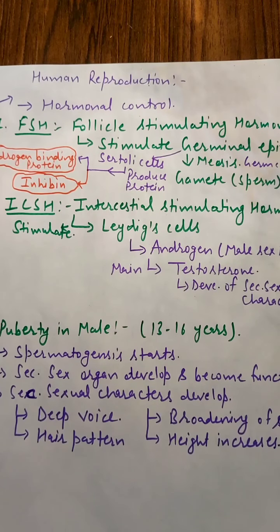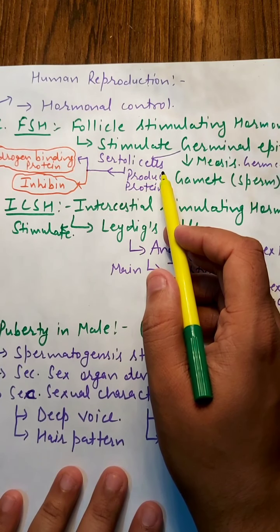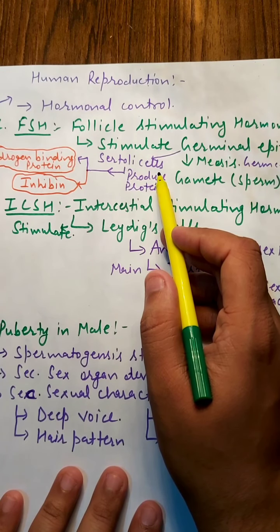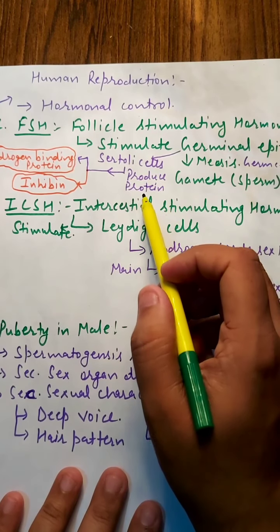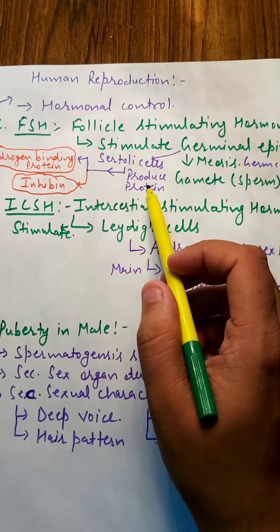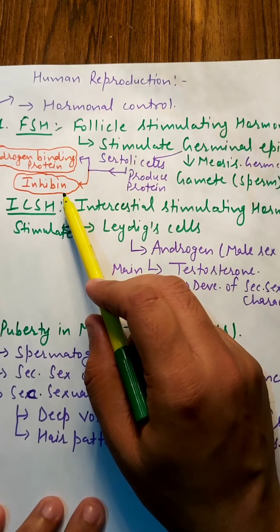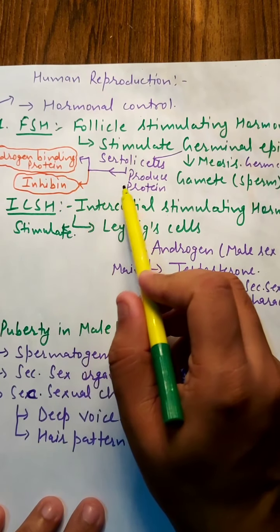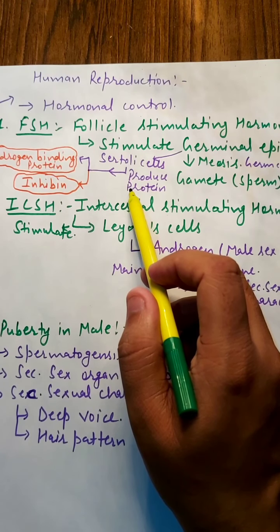Secondly, FSH will stimulate the Sertoli cells present in the seminiferous tubule. The Sertoli cells will produce two proteins: one is androgen binding protein and the second is inhibin. These will control the production or amount of production of testosterone.